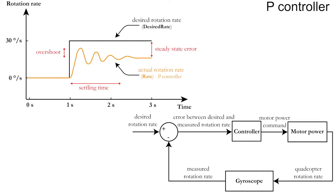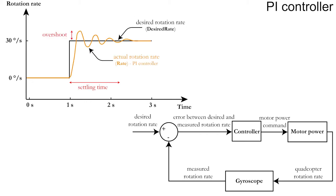Compared with the P controller, the PI controller will eliminate the steady state error, meaning that over time, the actual rotation rate will be equal to the desired rotation rate. Because the system still has a large overshoot and a long settling time, we will add a third and final part, the derivative term.